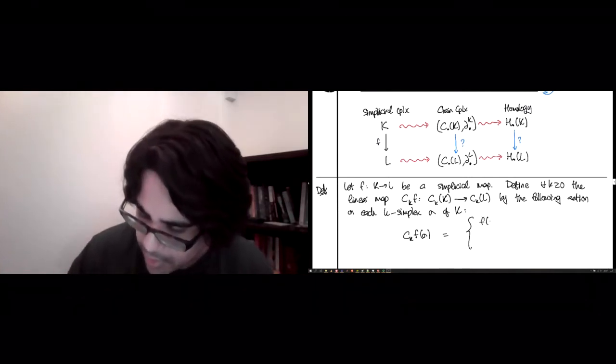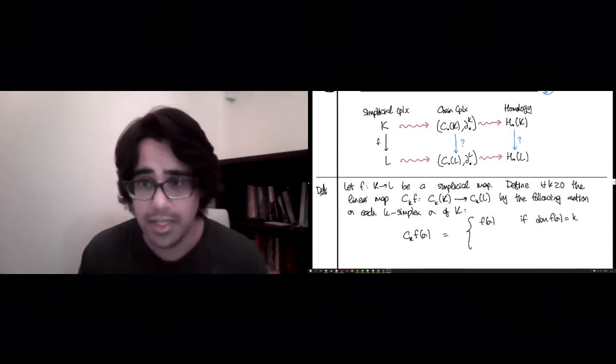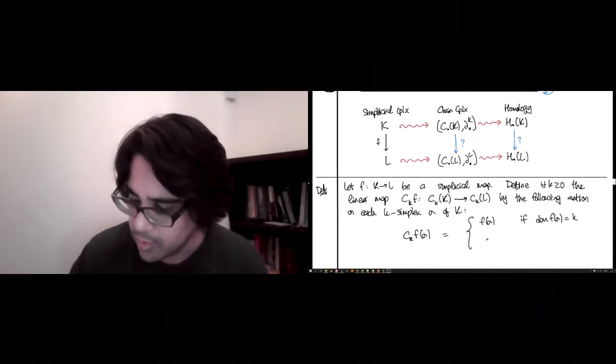And this is going to turn out to be the most natural thing you would want. This is the simplex f(σ) if dimension of f(σ) is the same as the dimension of σ, which in this case we assumed is k, and it's going to be zero otherwise.